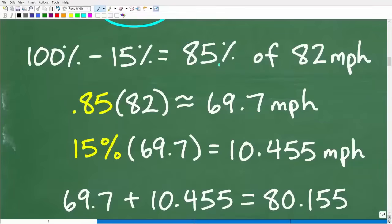So this is 85.0%. So the decimal point is right here. So we just move that over two places to the left or divide by 100. So that's 0.85. So we're going to take this 85% expressed as a decimal and multiply it by 82. So 0.85 times 82 is approximately 69.7 miles per hour.